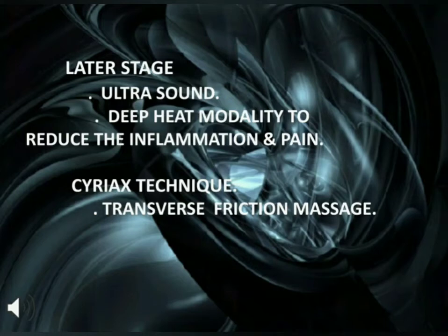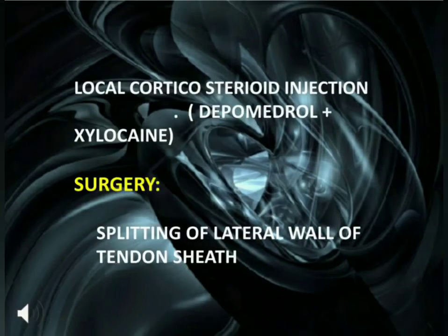Cyriax techniques like transverse friction massage are also given. Local corticosteroid injections include depomedrol and xylocaine. Surgery: Slitting of the lateral wall of the tendon sheath.